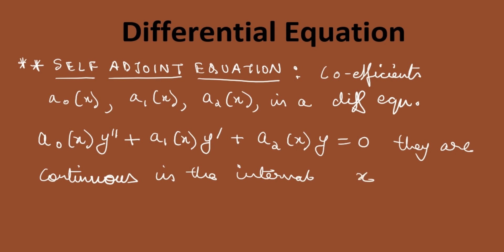They are continuous in the interval, say x ∈ [a, b], alright. And of course, a0(x) ≠ 0. If this happens on this interval.